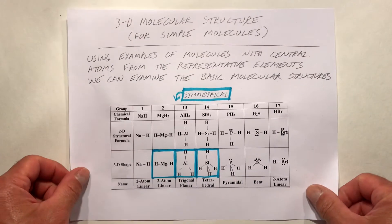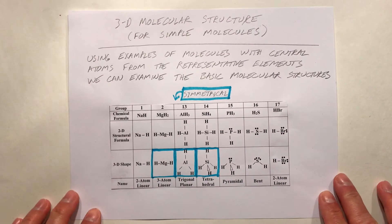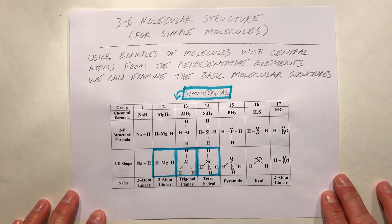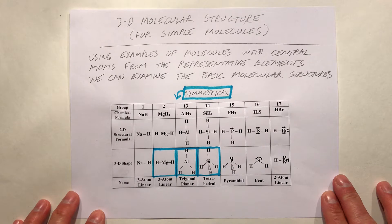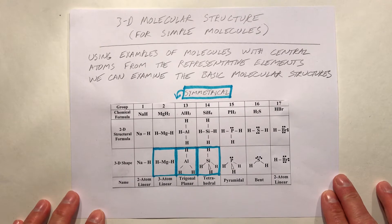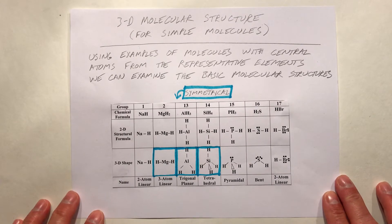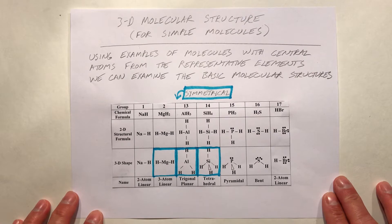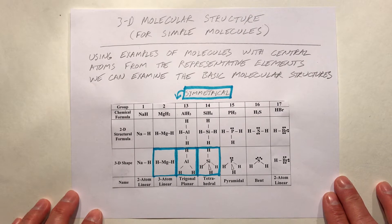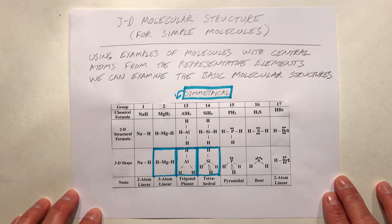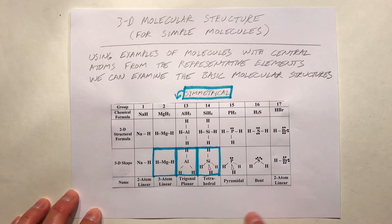It turns out that 3D molecular structure for simple molecules can be best understood using examples of molecules with central atoms from the representative elements. We can examine these basic structures with these examples.